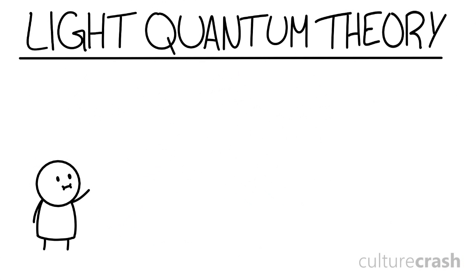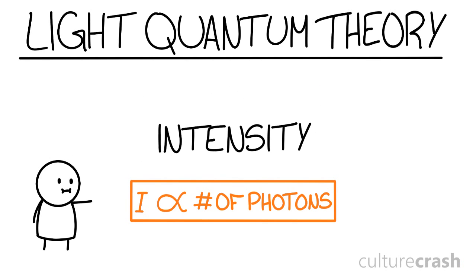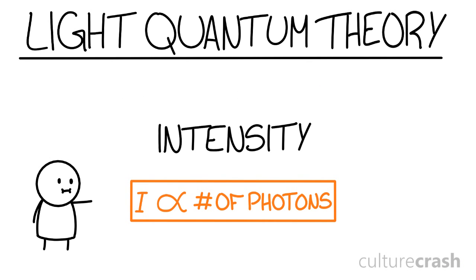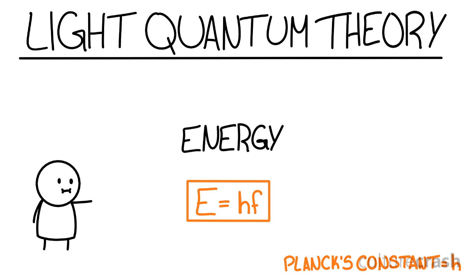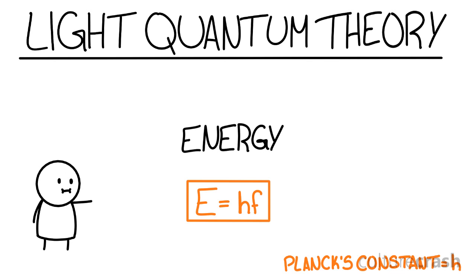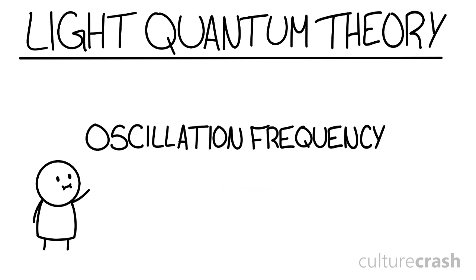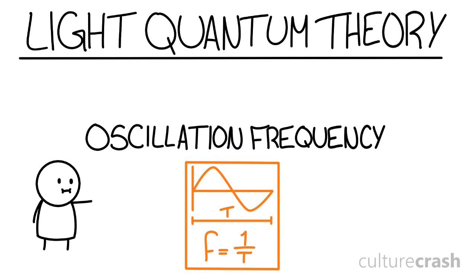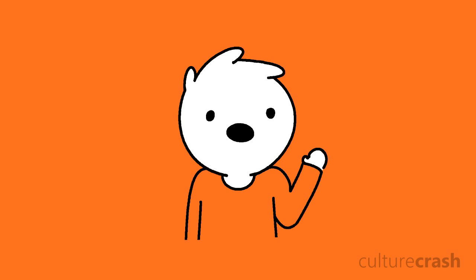Einstein's light quantum theory defined the intensity of light as being proportional to the amount of photons in a wave. The actual energy of the wave, however, was equal to its oscillation frequency times Planck's constant. The oscillation frequency is how often a photon completes a full cycle of a wave — up and down — and Planck's constant is a factor connecting these two variables.